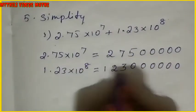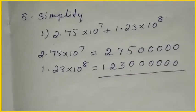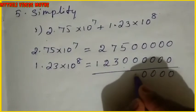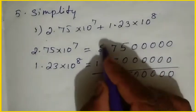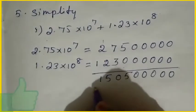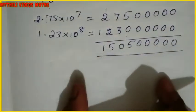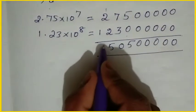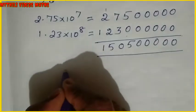When we change the decimal we put the point. Now we have to add. We add zeros as needed: 5 plus 0 is 5; 7 plus 3 is 10, so 0 carry 1; 2 plus 2 is 4; 4 plus 1 is 5. Now we have to write the result back in scientific notation.